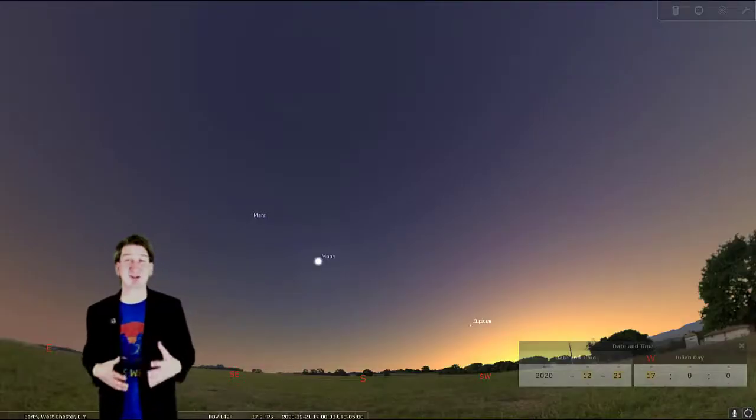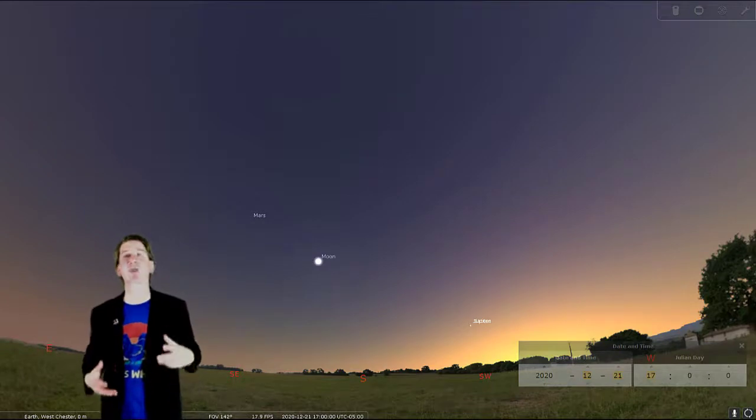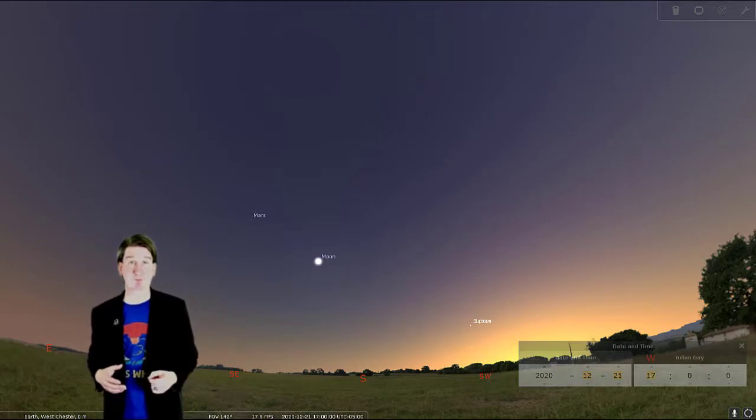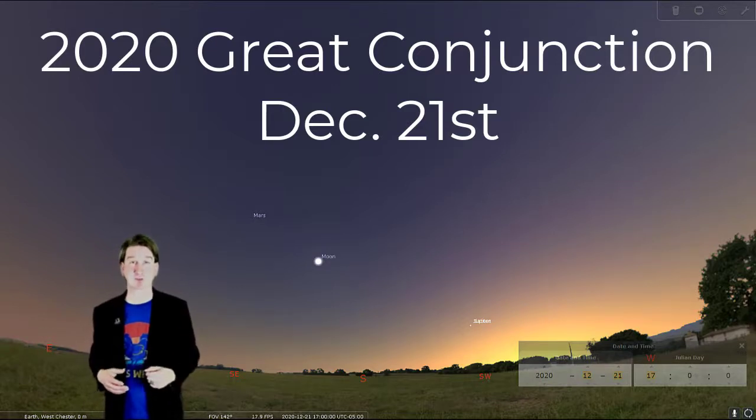If you're not into the whole sitting outside in December thing for a long time watching for meteors, there is an event to check out in the sky this month that only takes a few minutes to observe. This will be the great conjunction of Jupiter and Saturn on the 21st of December.